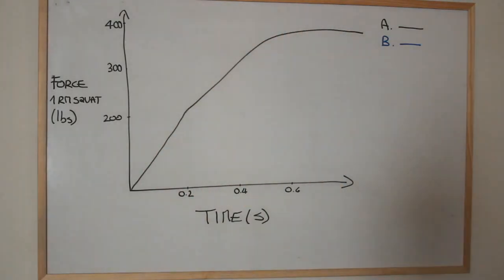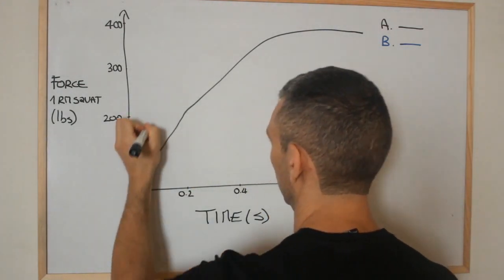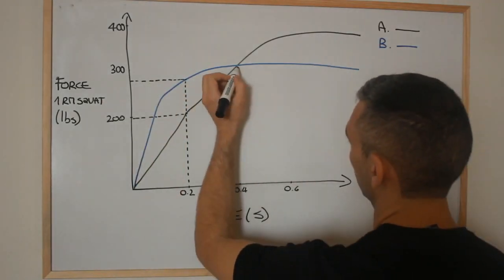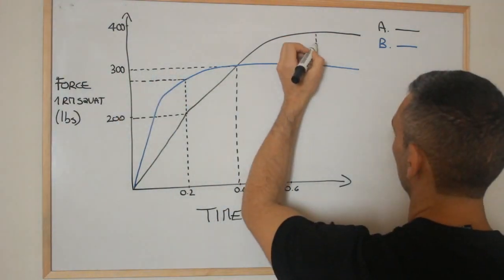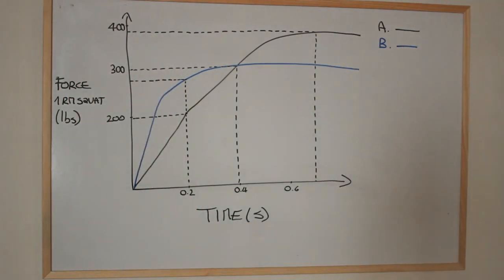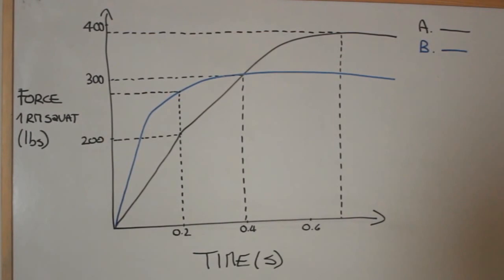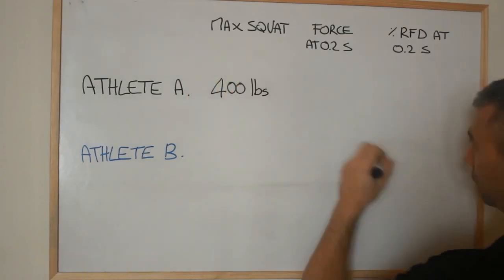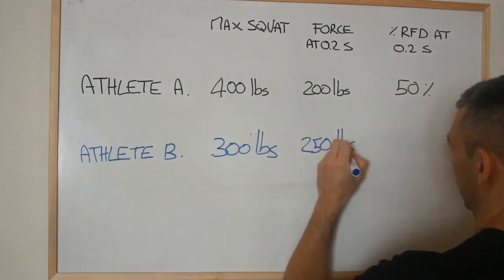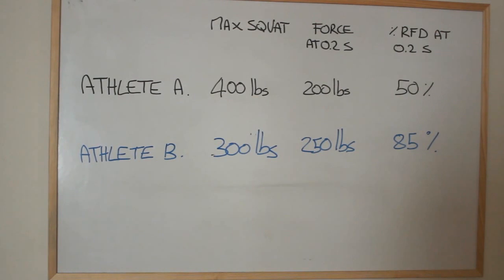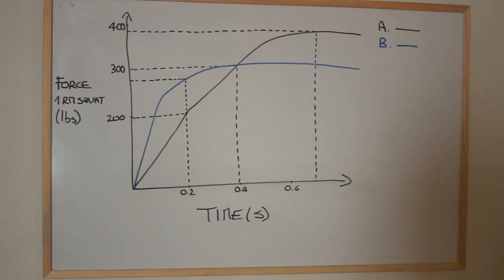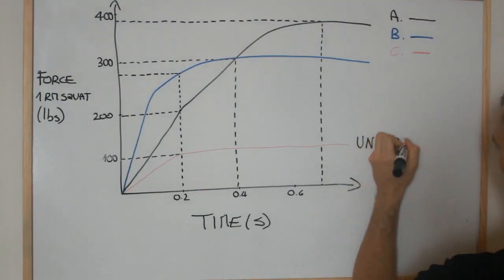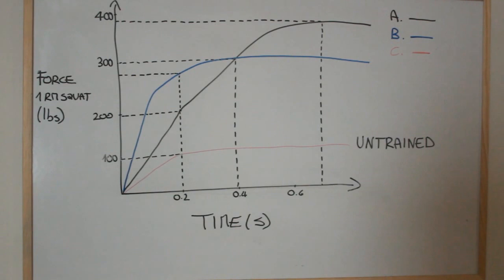For example, compare someone whose max squat is 400 pounds but who can produce 200 pounds of force in 0.2 seconds, to someone else who can only squat 300 pounds but who can produce 250 pounds of force in 0.2 seconds. The first person has good squat strength but is only able to use 50% of this strength in a short time. The second person is weaker but can produce nearly 85% of their maximum force almost instantaneously — so the second person will have a better chance of getting a higher jump. Remember though, without enough potential strength, rate of force development can become useless. The more limit strength you have, the more force you'll also be able to produce in a short time.